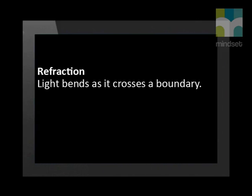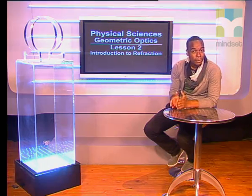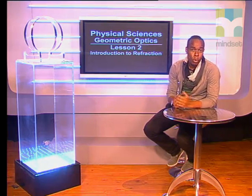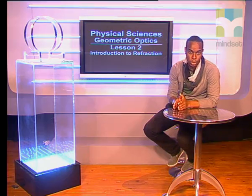So, in this lesson, we have seen how light bends as it crosses a boundary from one medium to another. Refraction is what happens when light bends as it crosses a boundary. Contrast this with reflection, which is when light bounces off a boundary surface. Next time, we will do a scientific investigation to discover the laws that apply to refraction. You will find more information about geometric optics at www.mindsearch.co.za/learn. Remember to try some of the questions in the task video too.